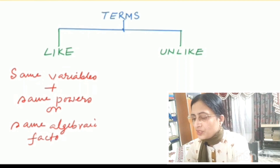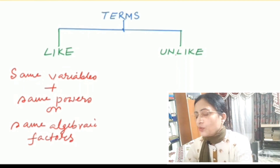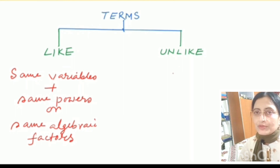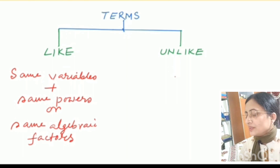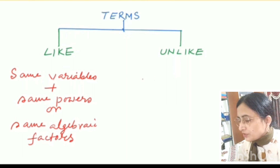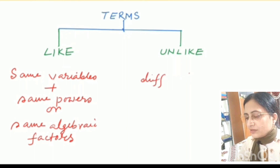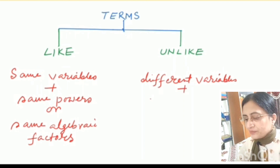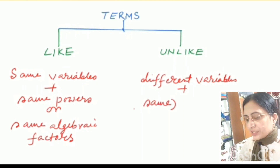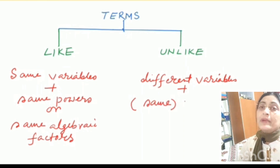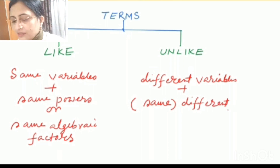In case of unlike terms, it is just the opposite — two terms are unlike when they have different variables with the same power, or different variables with different power, or different algebraic factors. Remember, to identify the types of terms we need to focus on the variables, not on the constants.